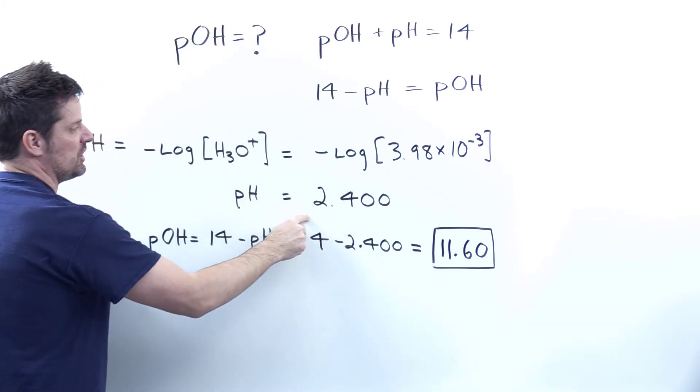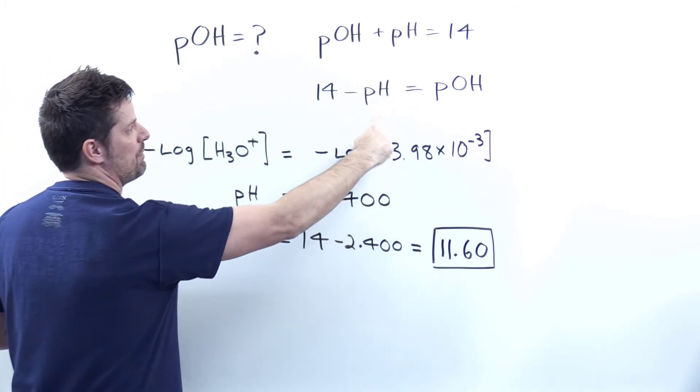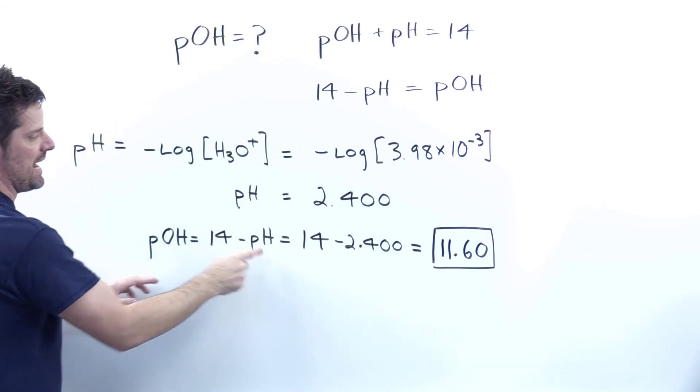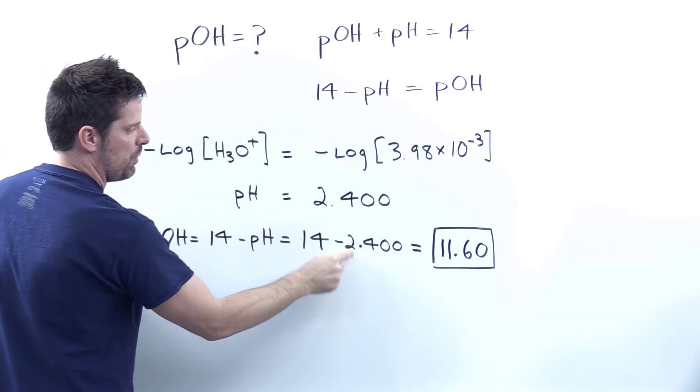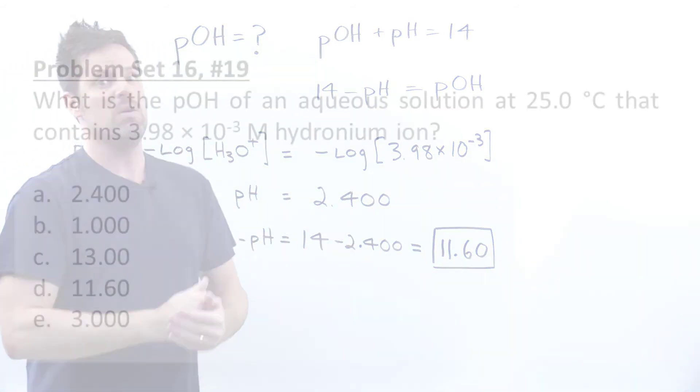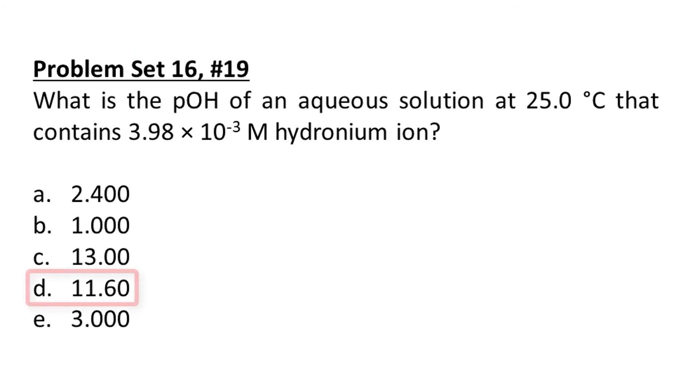Here is our pH. I'm going to take this number and insert it back up into this equation. Thus, pOH is going to equal 14 minus pH or 14 minus 2.400. You do that, you end up getting an answer of 11.60, which lines up with answer D.